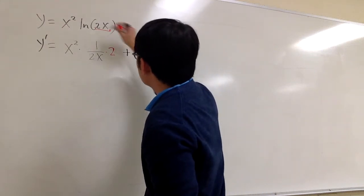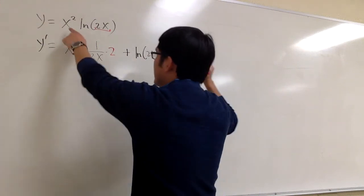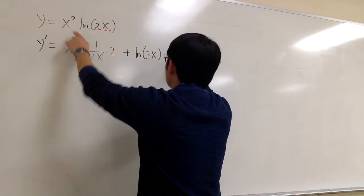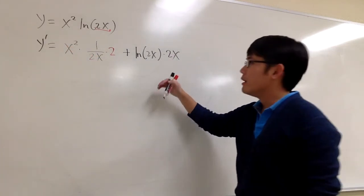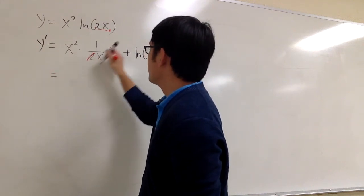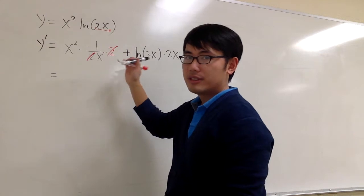And then I will add the second function, ln of 2x. And then look at the first times the derivative of the first, which is 2x. So this is what we have. And we can do a few clean-ups. For example, the 2 and 2 cancels, and x squared over x is just x.